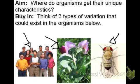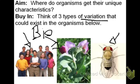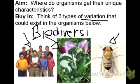We know that that variation is coming from sexual reproduction. Another word that the regents like to use for variation is biodiversity, which is just another way of saying genetic variation that exists. So where does all this biodiversity come from?